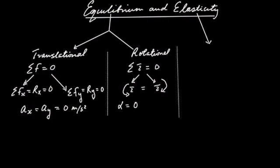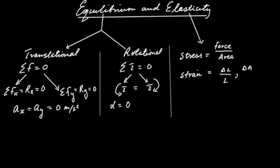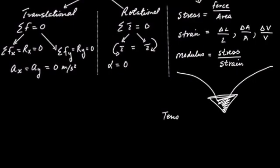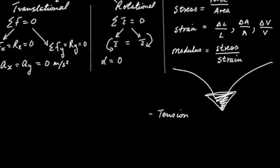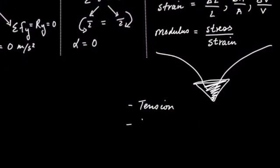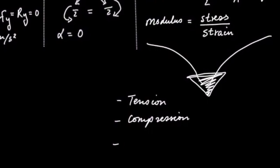Let's now talk about elasticity. In this section, you need to remember three things: stress, which is equal to the force over the area it's applied on; strain, which is the change in dimension over the original dimension — that could be length, area, or volume; and the modulus, which is stress over strain. You have different moduli depending on what is changing. Also, the force can cause tension, compression, or torsion/shear in the material.